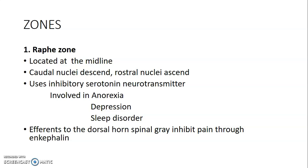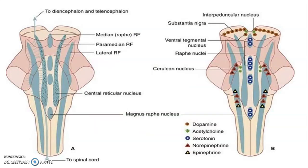The raphe zone is involved in anorexia, depression, and sleep disorders. Efferents to the dorsal horn spinal gray inhibit pain through enkephalin neurotransmitter. This shows the position of the midline zone, which is the raphe or median zone.